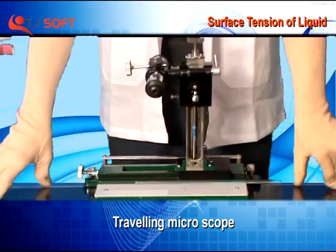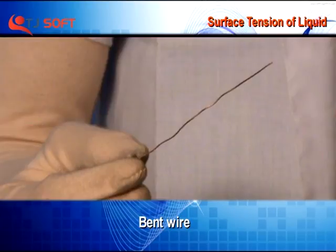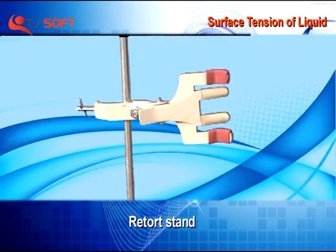The apparatus required includes a capillary tube, travelling microscope, beaker, water, bent wire, and retort stand.